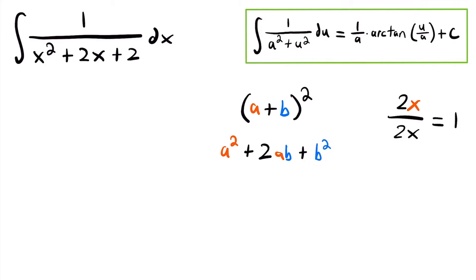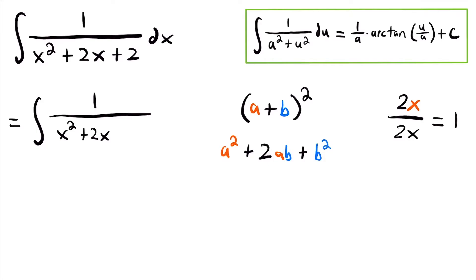Now that we know b² = 1, all we have to do is add and subtract that value to the expression. So this is equal to the integral of 1 divided by x² + 2x + 1 - 1 + 2, then dx. We added and subtracted 1 in the denominator, so we haven't really changed the function in any way — the 1 and negative 1 cancel each other out.